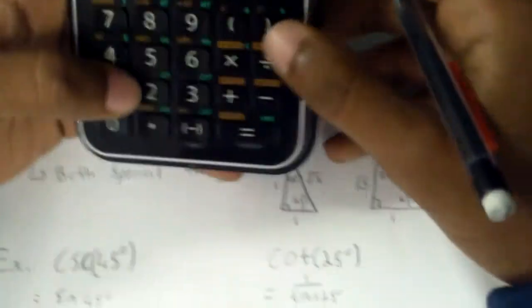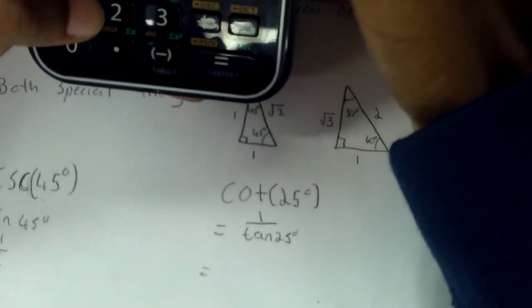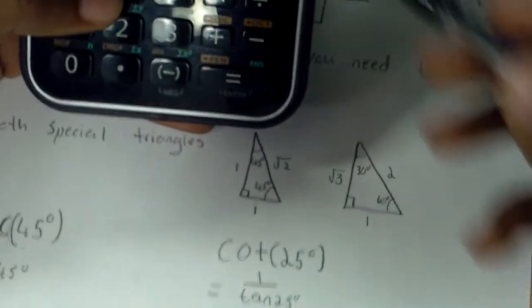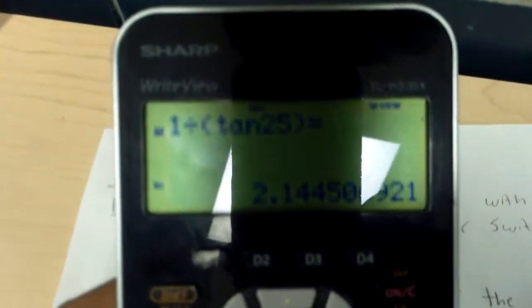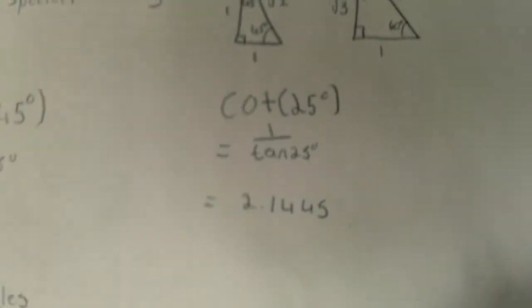you can do exact values. So plug it into your calculator, tan of 25 is equal to 2.1445. And you do it to four decimal places.